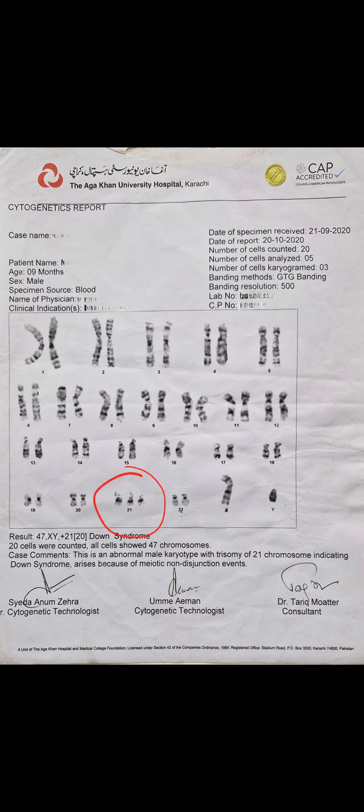If the patient has 46 chromosomes with 23 pairs, we call it euploidy. If the chromosome number is increased — 47, 48, 49 — or decreased — 45, 44 — we call this aneuploidy. In this case, the patient has aneuploidy with an extra chromosome on chromosome 21, which is basically seen in Down syndrome.